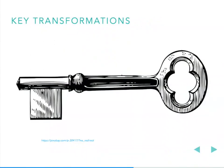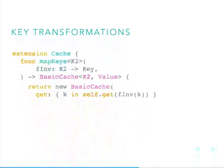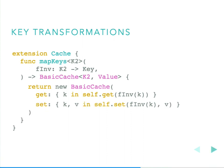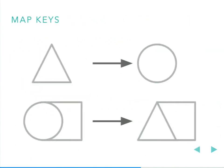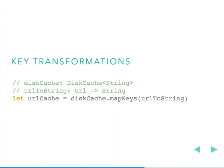Key transformations are similar. If we have the inverse transformation, we can create a cache of a new key type. We're given the new key and call get with the old key using new-to-old mapping, same with set. In a picture: we have a cache that accepts circles as keys and want one that accepts triangles as keys. Concretely, we have our disk cache, a way to turn URLs into strings — we apply map-keys and get back a cache that accepts URLs.